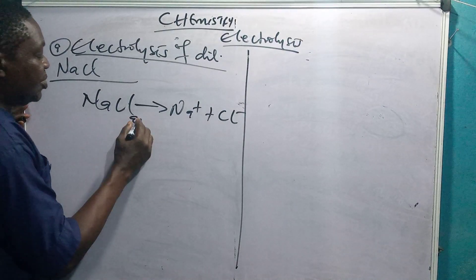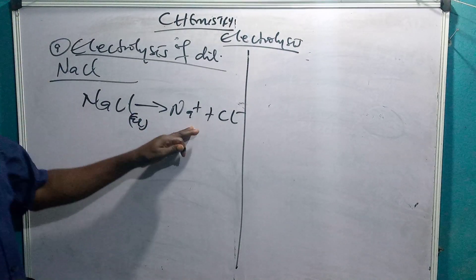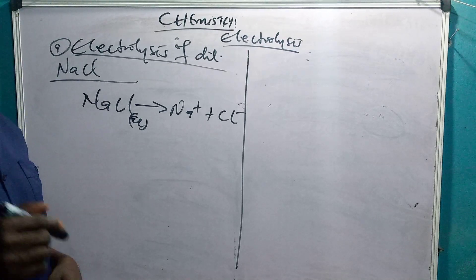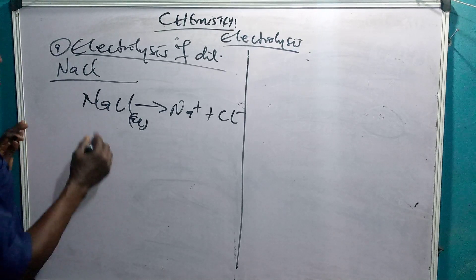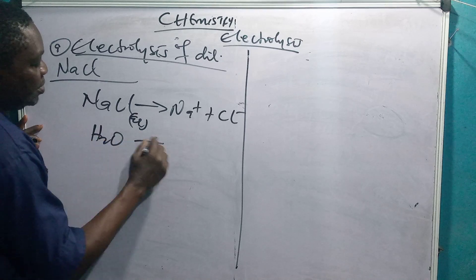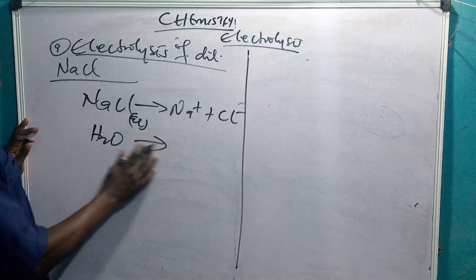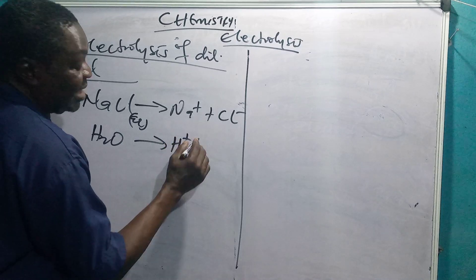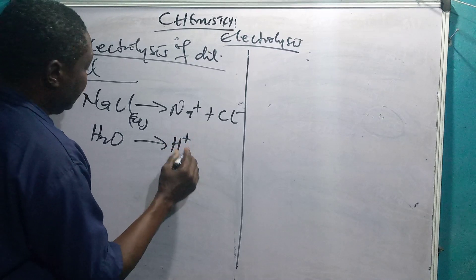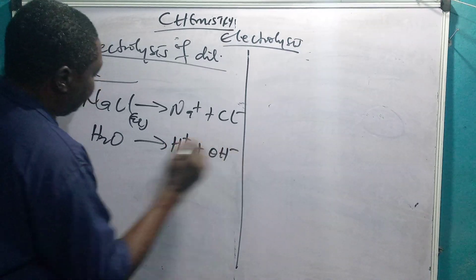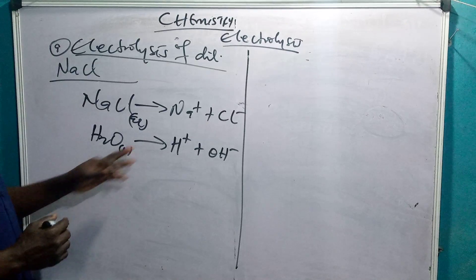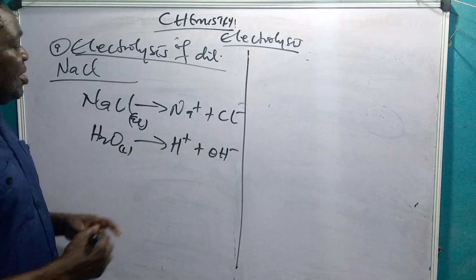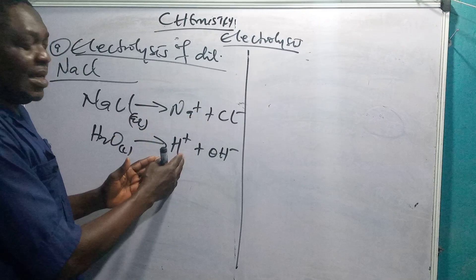This happens because it is in an aqueous solution. After NaCl has ionized, the water in which it is dissolved will also undergo ionization. We have H₂O giving H⁺ plus OH⁻. So now you have two sets of ions in solution.